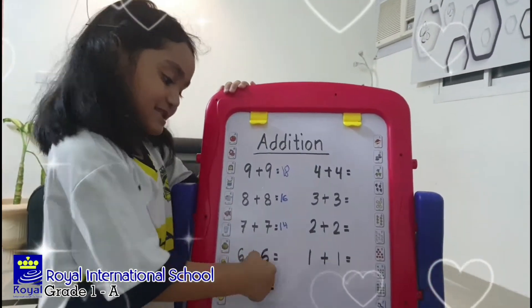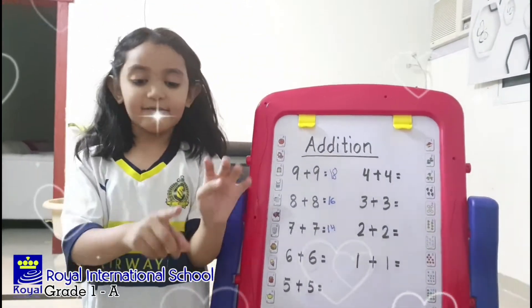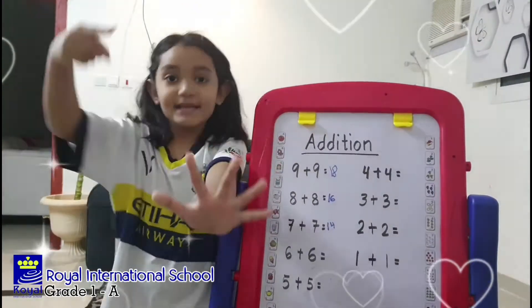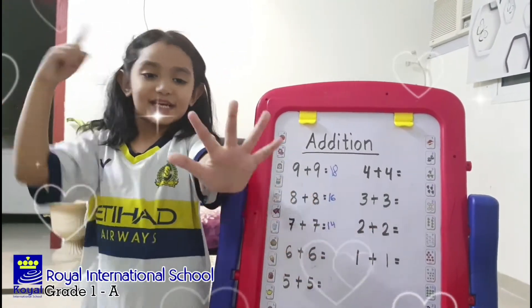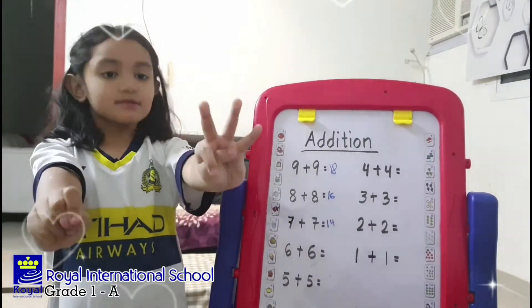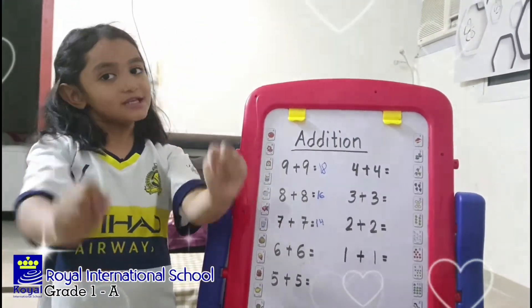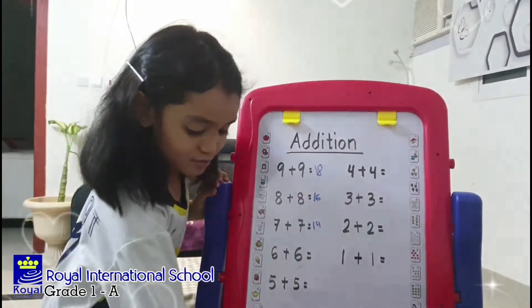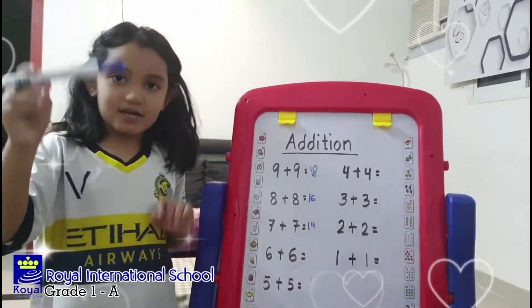6 plus 6. I have 6 in my hands, 6 in my mind. After 6: 7, 8, 9, 10, 11, 12. How to write 12? 1, 2.